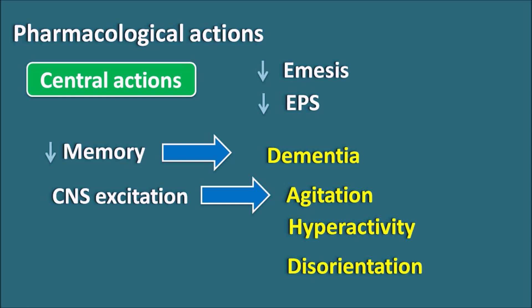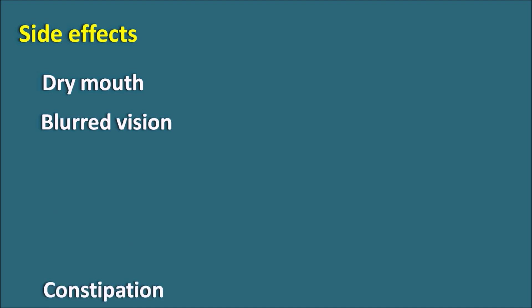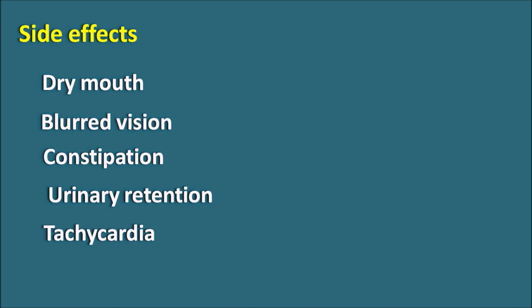The two important beneficial central actions are: anticholinergics can be used as antiemetics and as anti-parkinsonian agents to decrease extrapyramidal side effects. The four important side effects to always remember are: dry mouth (due to inhibition of salivary secretion), blurred vision (due to inhibition of lacrimal secretion), constipation (due to decreased GI motility), and urinary retention (due to bladder relaxation).